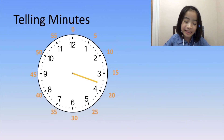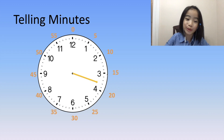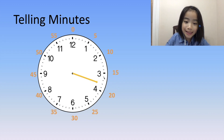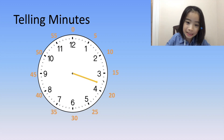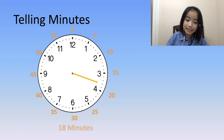Now, let's look at this example over here. The minute hand is between 15 minutes and 20 minutes, which is the 3 and the 4. So we count: this is 16 minutes, this is 17 minutes, and this is 18 minutes. So the minute hand is pointing to 18 minutes.